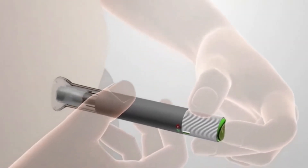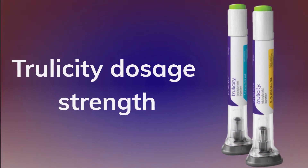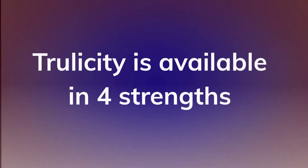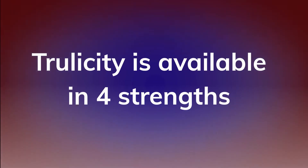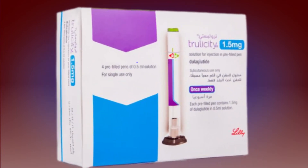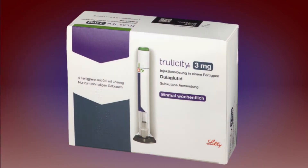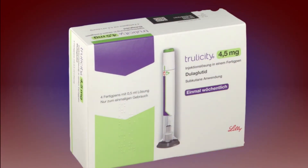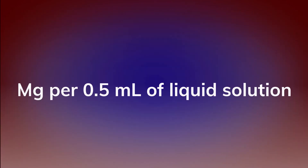What is the Trelicity dosage strength? Trelicity is available in 4 strengths: 0.75, 1.5, 3, and 4.5 mg per half an mL of liquid solution.